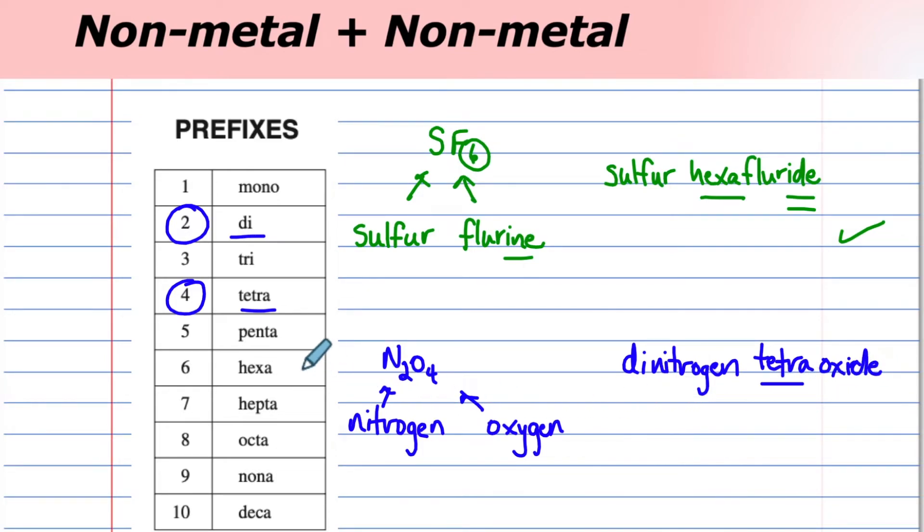Again, the tetra comes from 4. Di comes from 2. And the element oxygen changes to an oxide.